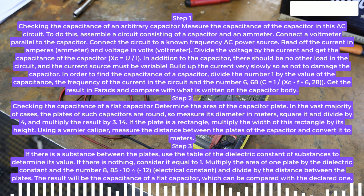Multiply the area of one plate by the dielectric constant and the number 8.85 times 10 to the power of negative 12, the electrical constant, and divide by the distance between the plates. The result will be the capacitance of a flat capacitor, which can be compared with the declared one.